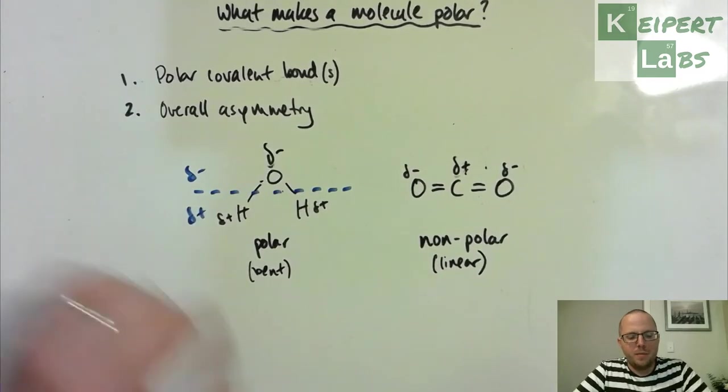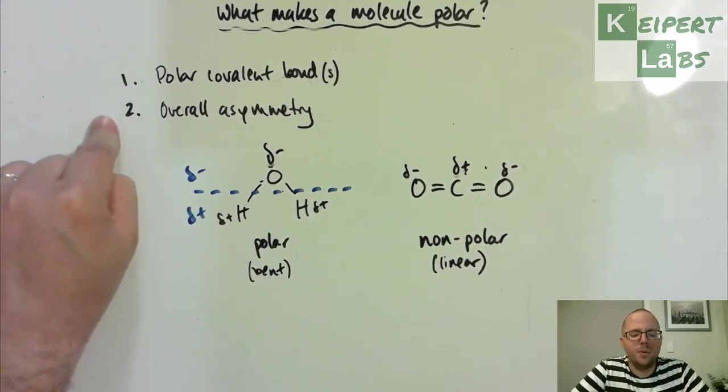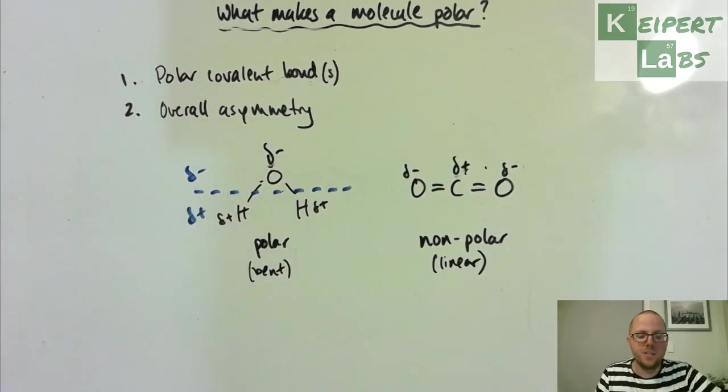You need to have polar covalent bonds, at least one. More certainly makes the molecule more polar. And it must have overall asymmetry. That is, the molecule as a whole must have a positive and negative end. If it only ticks one of those boxes, then it cannot be polar. Thanks very much for watching. Bye for now.